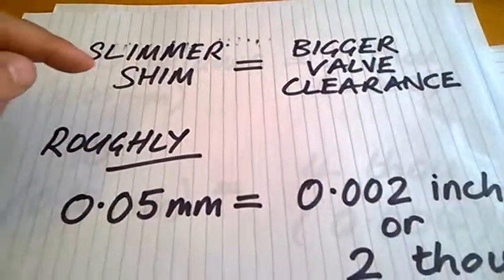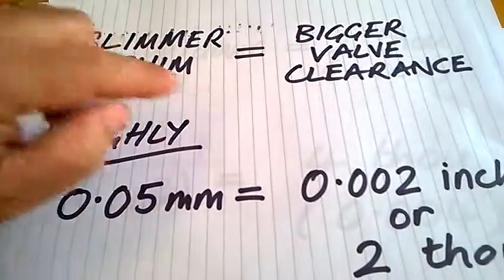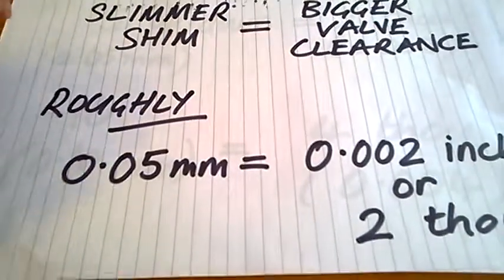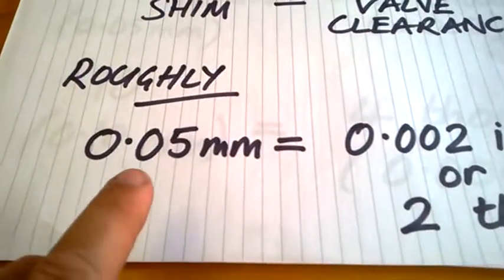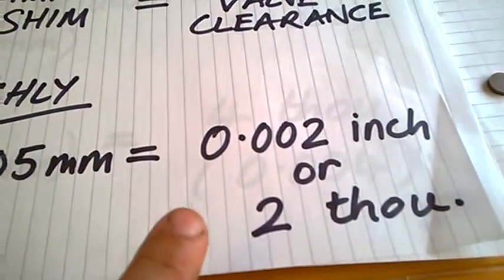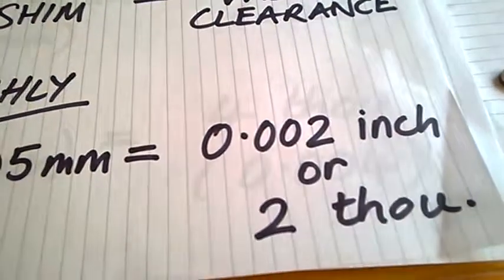So general principle is if you put a slimmer shim in, you're going to get a bigger valve clearance. Or put a thicker shim, you're going to get a tighter valve clearance. And roughly 0.05mm is equivalent to a 2 thousandths of an inch change.